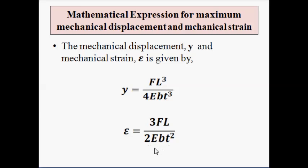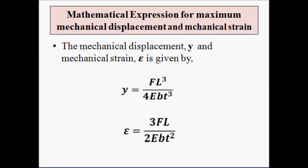The mechanical strain epsilon is equal to 3FL / (2EBT²). The symbols represent the usual values: F for force, capital L for length, small B for breadth, T is the thickness of the beam, and epsilon is the mechanical strain which is induced.